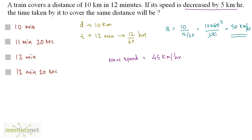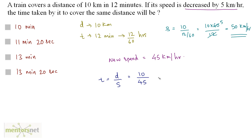The question is: how much time is taken by this train to cover the same distance with this new speed? Time is equal to distance upon speed. The distance is the same, that is 10 km, upon the new speed of 45 km per hour. So 10 by 45 — 5 twos are 10, 5 nines are 45 — so that is 2 by 9 hours.